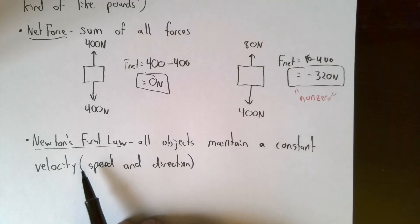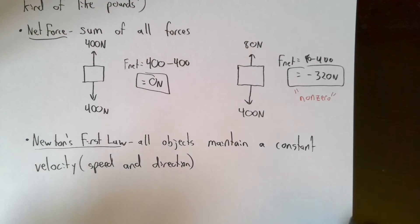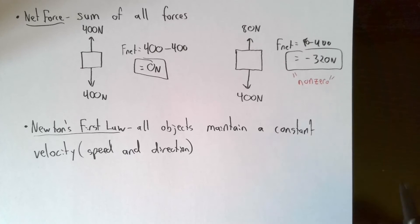That means if it's at rest, it stays at rest with a velocity of zero. If it has a velocity of zero, it'll keep that velocity of zero. If it has a velocity of 40 meters per second, it'll keep that velocity of 40 meters per second.